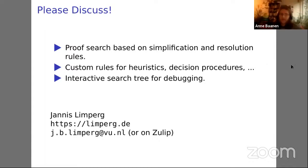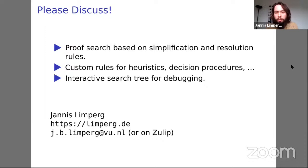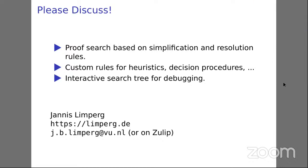Q: Have you considered calling auto from the simplifier? For example, if you have 'x times y times x_inverse,' and auto can prove x is nonzero, the simplifier could leverage that. A: Yes, absolutely — I think this is what Isabelle does as well. For conditional rewriting, where equalities have preconditions that need to be discharged, we would call auto recursively for those preconditions, which are hopefully simple enough to be discharged in most cases.